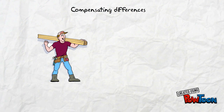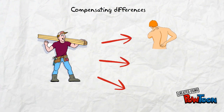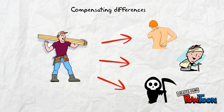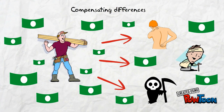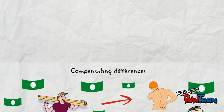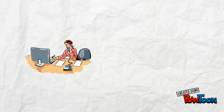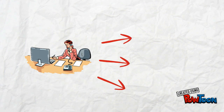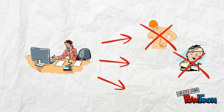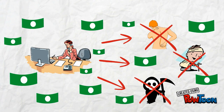We use the example of a construction worker to explain what compensating differences means. This is Ismet. Because his job may involve a sore back, injuries, or the risk of death, he will be paid more to compensate for these non-monetary differences. Different to Ismet, this is Edira. She works in an air-conditioned office with a very comfortable chair. Her job doesn't involve a sore back, injuries, or death. Therefore she doesn't have any compensating differences and will be paid less.